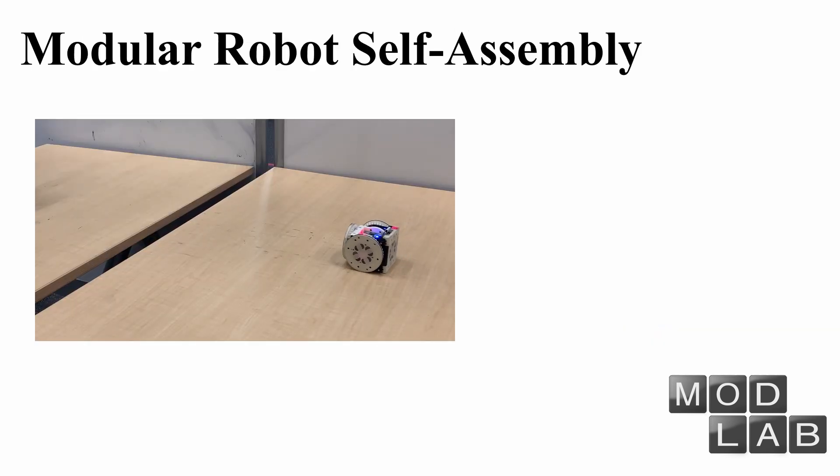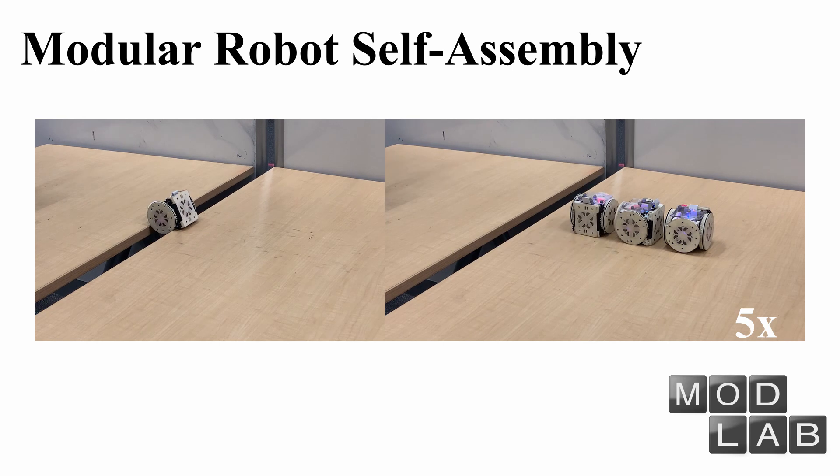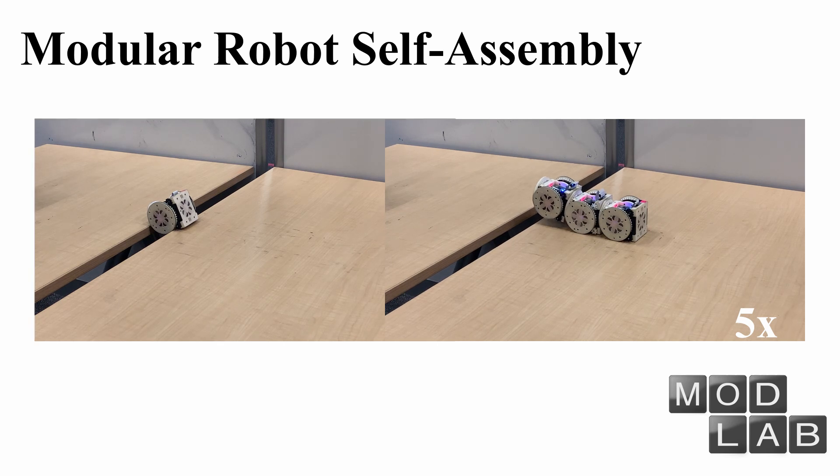A single module has very limited motion capability. For example, an individual cannot go across this gap. However, three individual modules can come together to form a snake configuration that is able to overcome the same difficulty. This is called the self-assembly process.